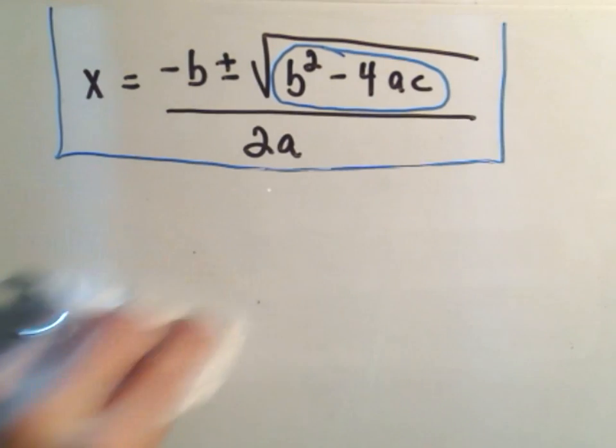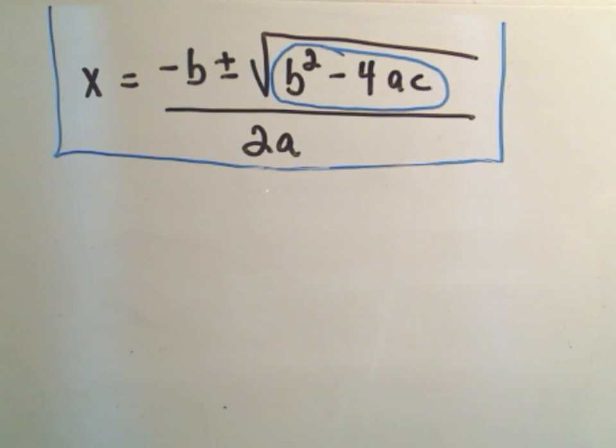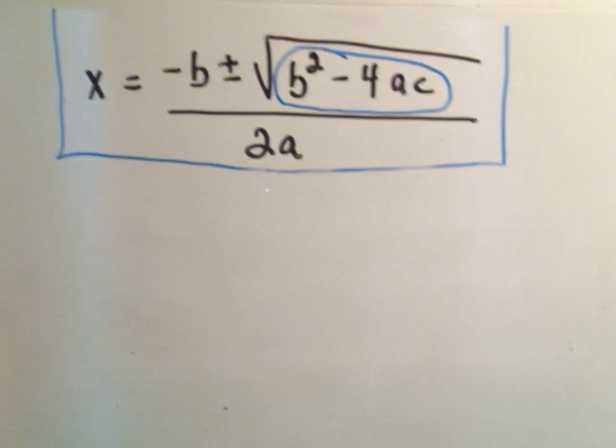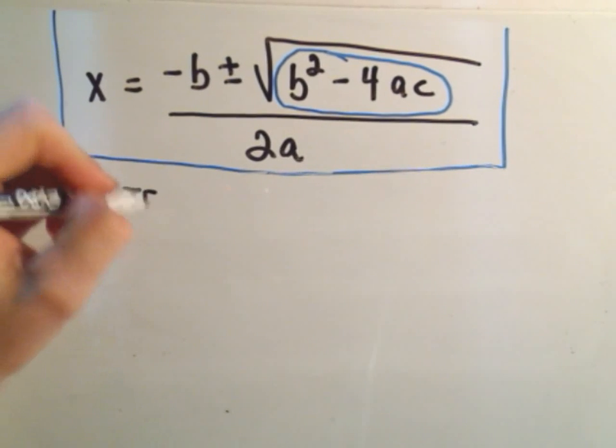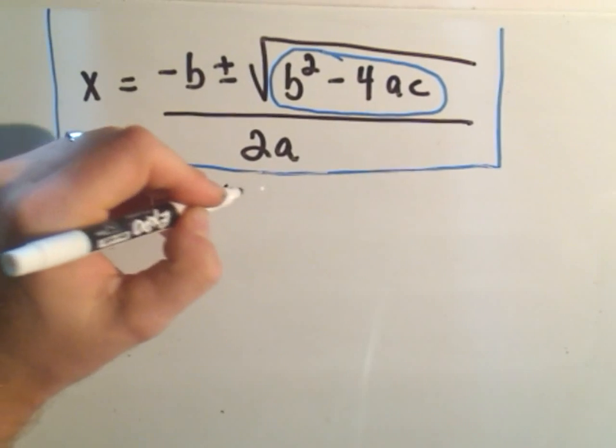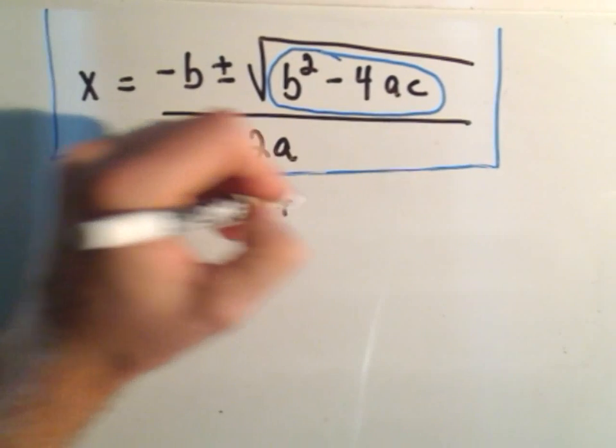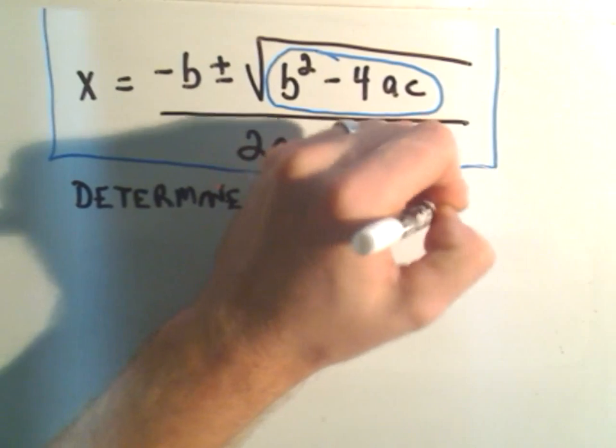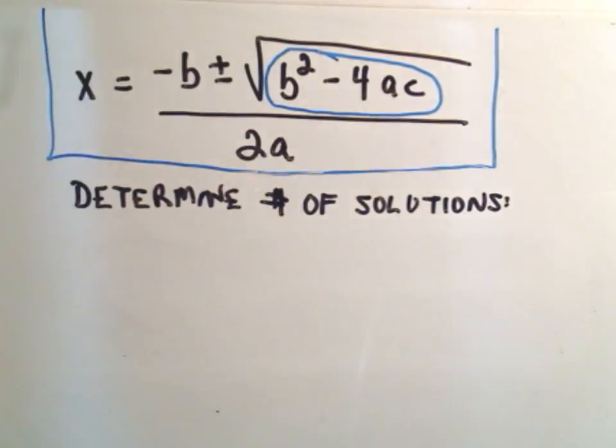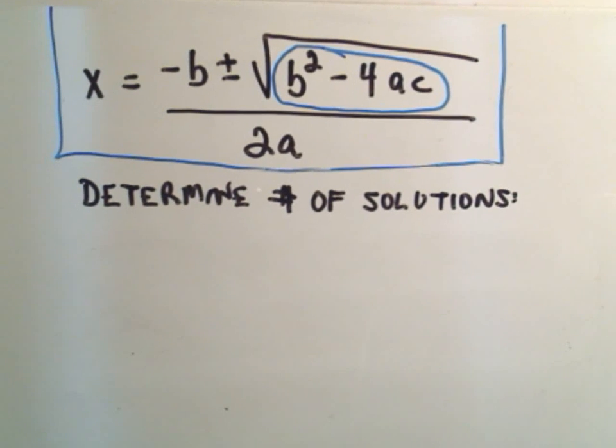So I'm just going to do two quick examples. Sometimes they'll say determine the nature of the solutions. So I'm just going to determine the number of solutions. Obviously it wouldn't be a tremendous amount of extra effort to actually use the rest of the quadratic formula to actually find the solutions. But here we'll just determine the number of solutions.